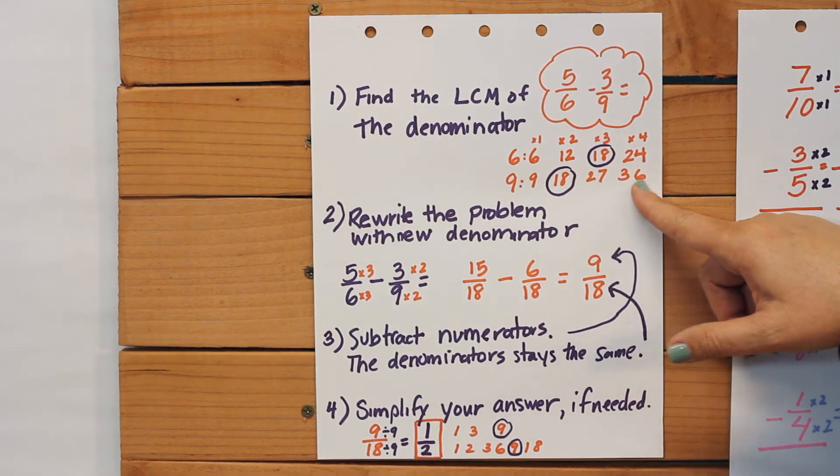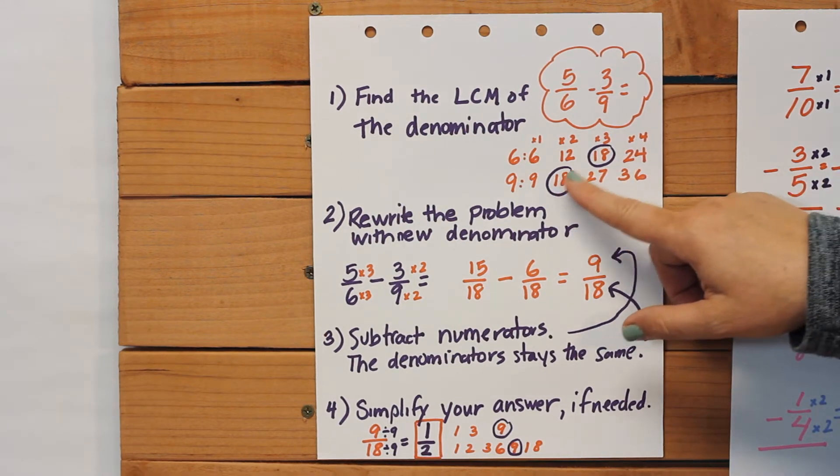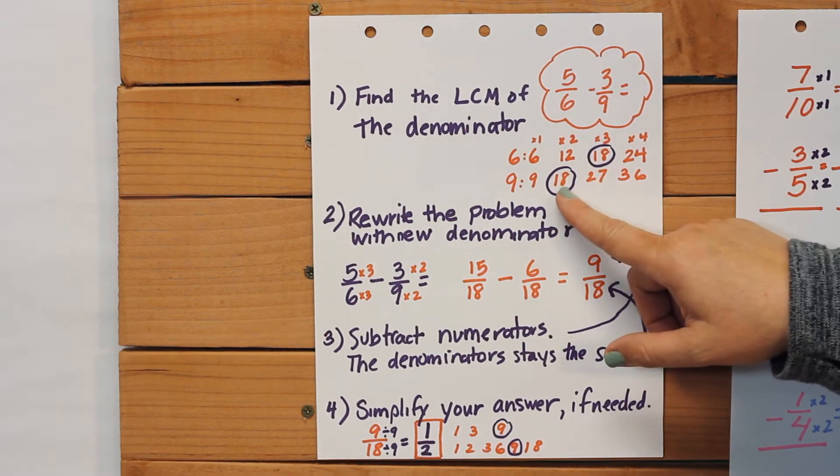Nine times three is twenty-seven, and nine times four is thirty-six. Well, I can see that I have my eighteens are common.